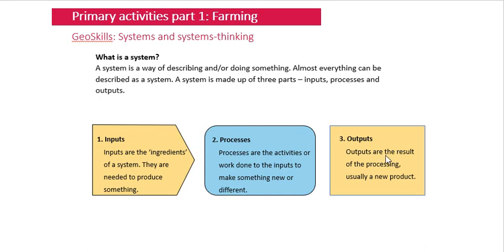An output is what you get from a farm. From a dairy farm, an output would be milk. From a beef farm, your output is beef. On a sheep farm, your output would be lamb and wool. On a tillage farm, your output could be wheat or barley, which could then be made into bread or pasta.